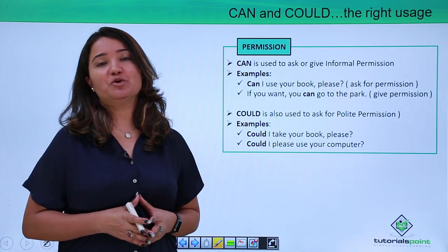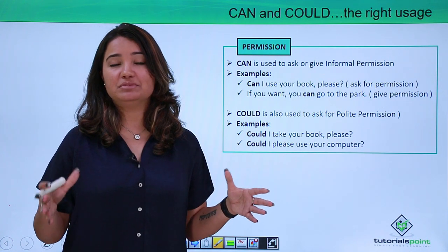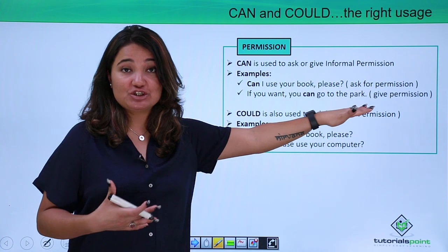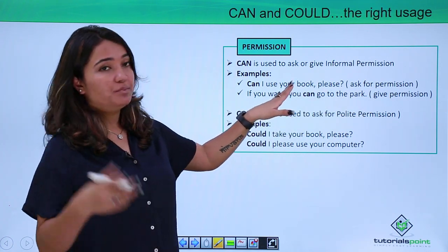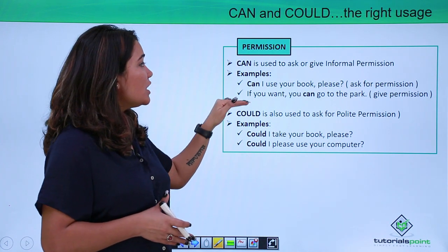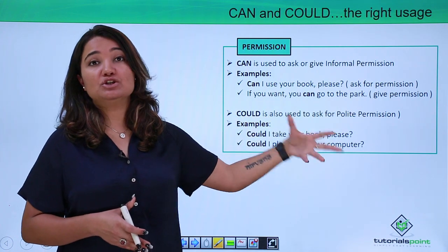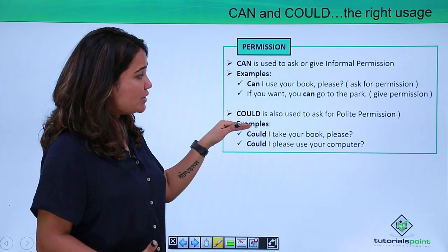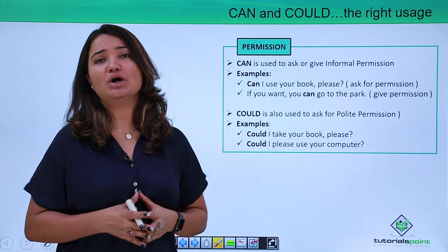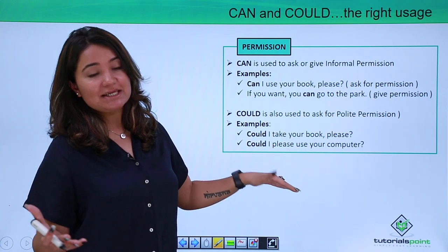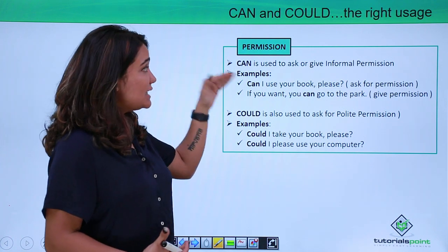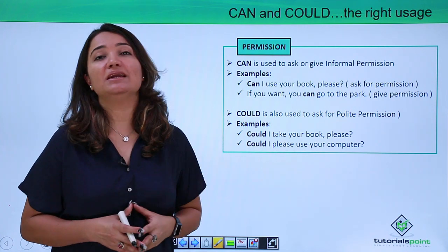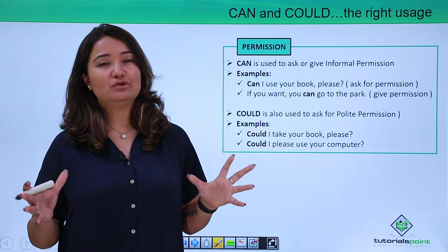Can and could are both used for granting or taking permission. Can is used to ask or give informal permission. For example: 'Can I use your book please?' — you are asking for permission — or 'If you want, you can go to the park' — giving permission. Both are informal. Could is used to ask for polite permission: 'Could I take your book please?' or 'Could I please use your computer?' Could is more polite compared to can.